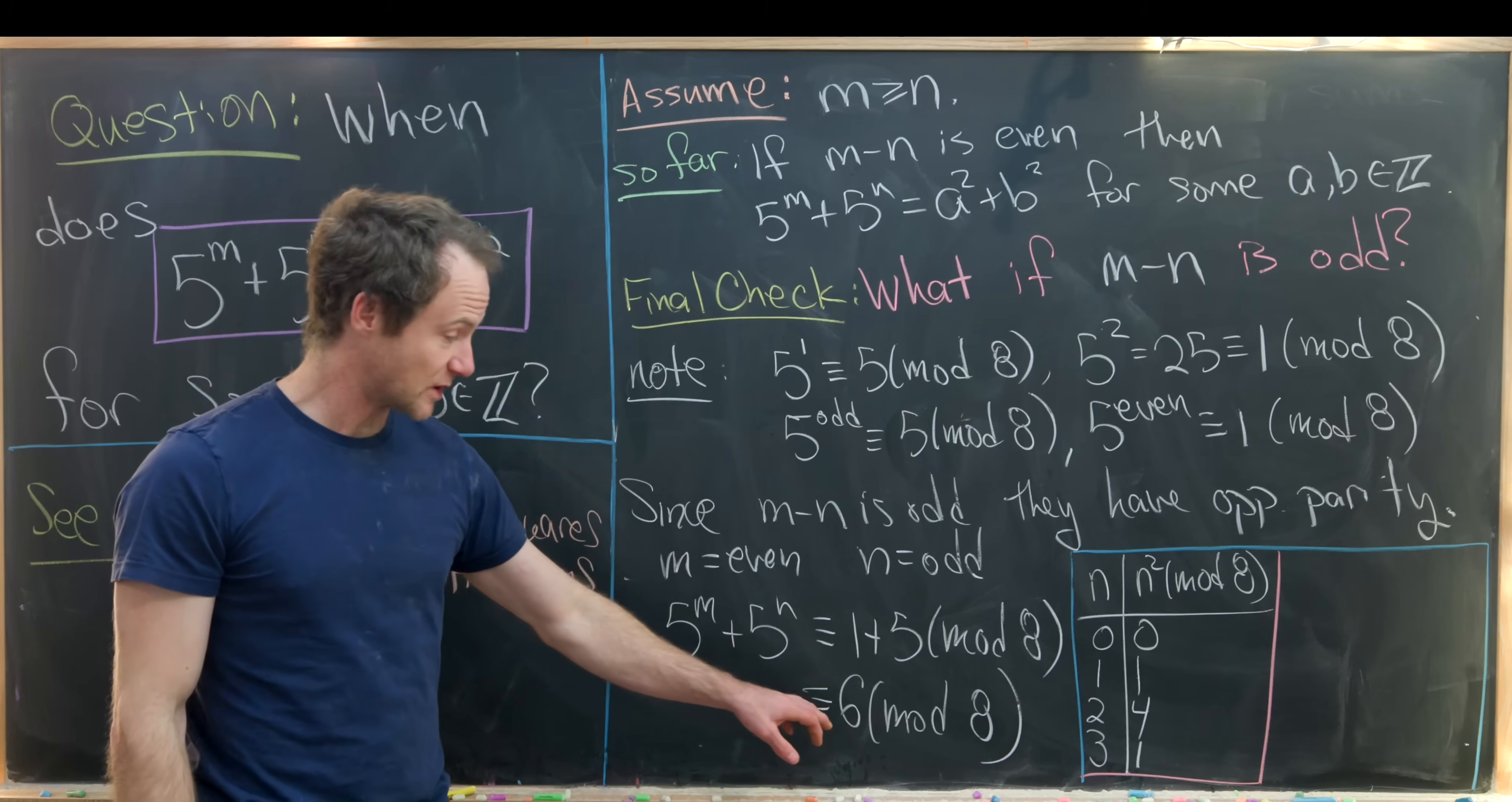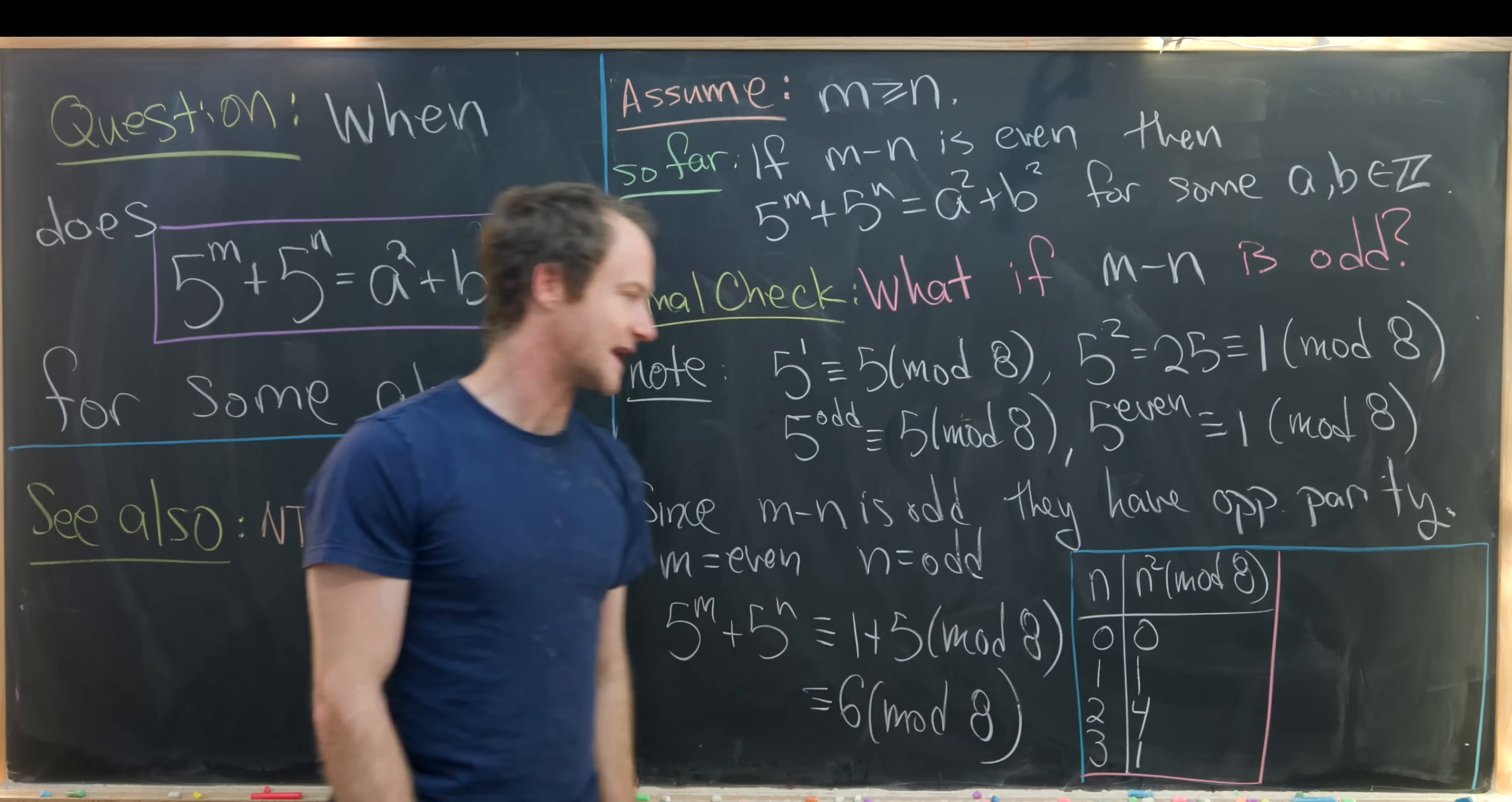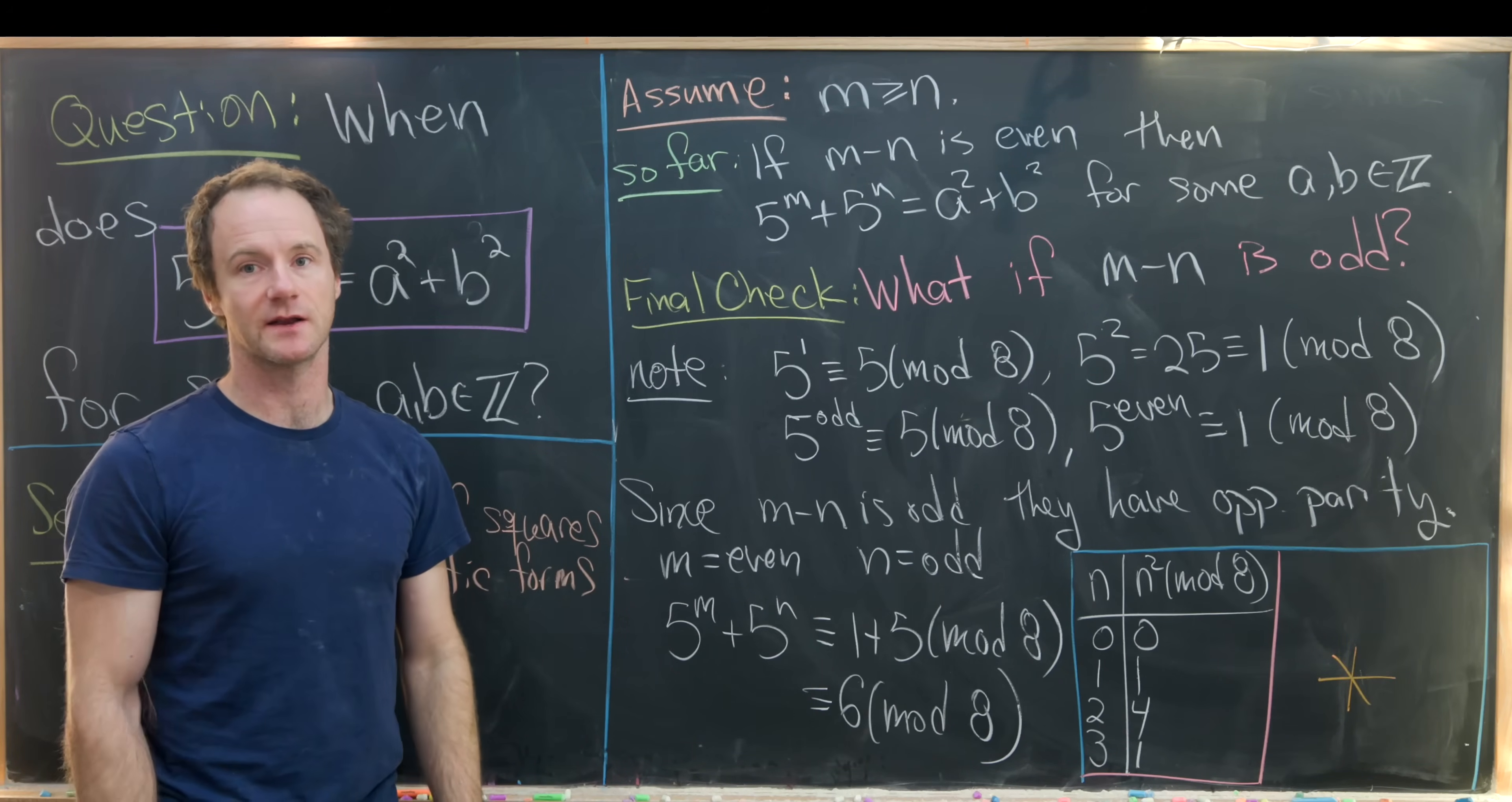But now let's notice that if we want to write 6 as the sum of two squares then we're writing 6 as the sum of two numbers from this chart. But the sum of any two numbers from this chart is never equal to 6. So 0 plus 1 is 1. 0 plus 4 is 4. 4 plus 1 is 5. That's not equal to 6. So needless to say we cannot achieve 6 mod 8 by taking the sum of two squares. So I won't write that down. It's a little bit wordy. I'll let you think about how to write that down really carefully. But that's the gist of how to finish this. So that leads us to an impossibility of writing 5 to the m plus 5 to the n as the sum of two squares when m minus n is odd. And that's a good place to stop.